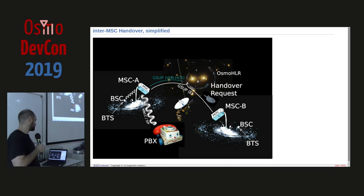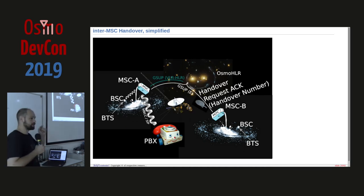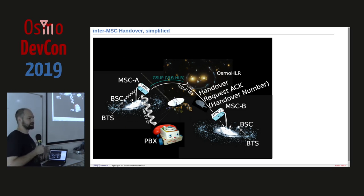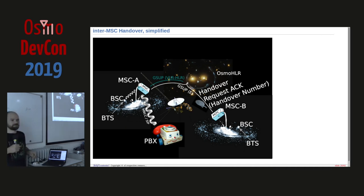The second MSC sets up a channel on the BSC it knows, prepares everything, and sends back a handover request ACK. It also assigns a handover number on the MNCC-SIP link — basically a complete full phone number. The PBX needs to know where these numbers should be routed. It's a set of numbers used for a handover and then freed again — very transitory. In our case you configure a special range for handover numbers.